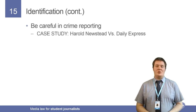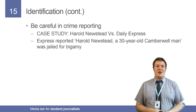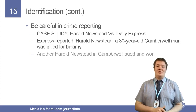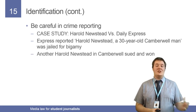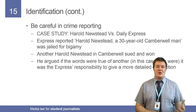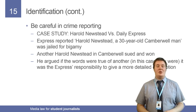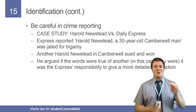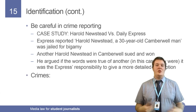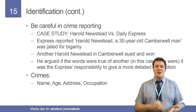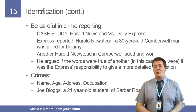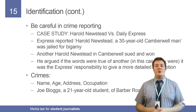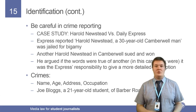Be incredibly careful in crime reporting. The case study is Harold Newsted versus the Daily Express. The Express wrote 'Harold Newsted, a 30-year-old Camberwell man, was jailed for bigamy.' Another Harold Newsted who worked in Camberwell sued and won, because the judge ruled that if the words were true of another, it was the newspaper's responsibility to give a more detailed description — adding details to narrow it down so your report is only true to one person. With crimes, it is best to go name, age, address, and occupation. In student reporting it would be 'Joe Bloggs, a 21-year-old student, of Barber Road' — or even 'a 21-year-old psychology student' to really narrow it down.